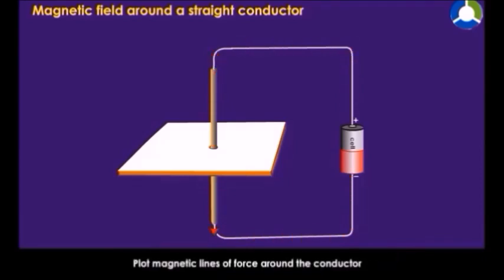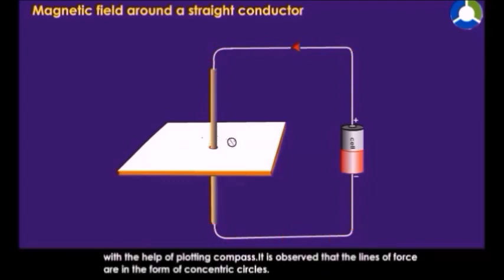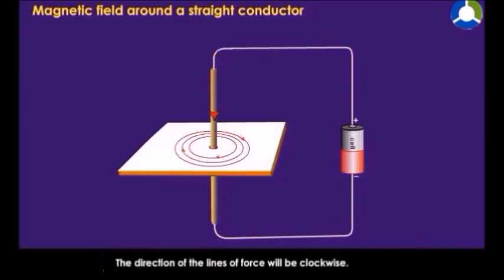Plot magnetic lines of force around the conductor with the help of plotting compass. It is observed that the lines of force are in the form of concentric circles. The direction of the lines of force will be clockwise.